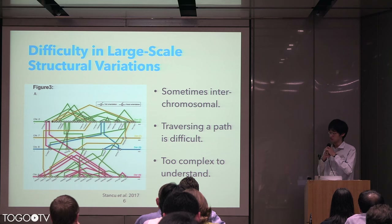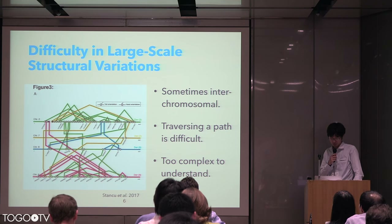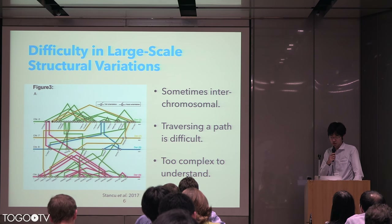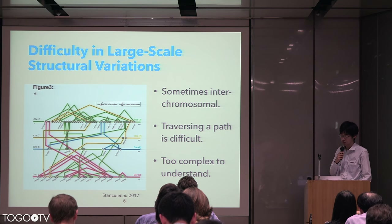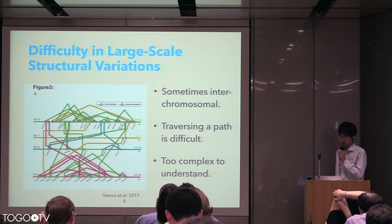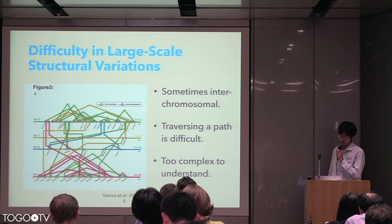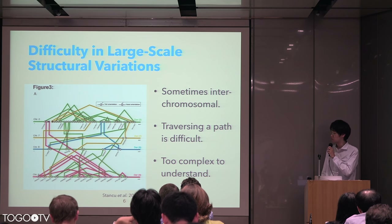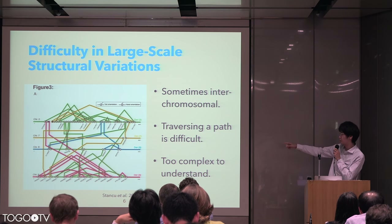However, sometimes structural variations can be complex, especially in the patient genome. Variations may be interchromosomal, so the patient genome is difficult to compare with the reference genome. Even if the patient genome can be compared with the reference genome, traversing a patient genome's chromosome is very difficult, as shown in this figure. So, the whole structure of human variation can be too complex to understand. You may wonder what these variations mean biologically.